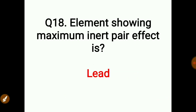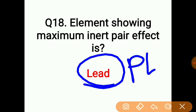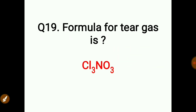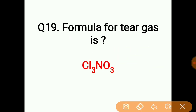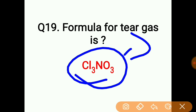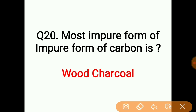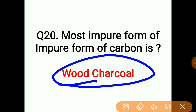The element showing the maximum inert pair effect is lead (Pb). The formula for tear gas is CCl3NO3. The most impure form of carbon is wood charcoal.